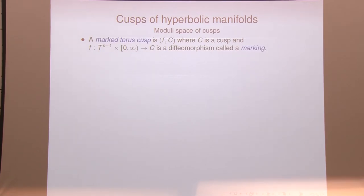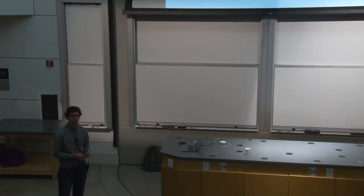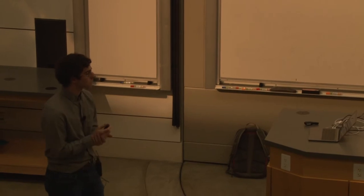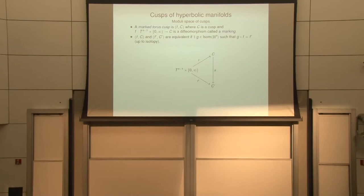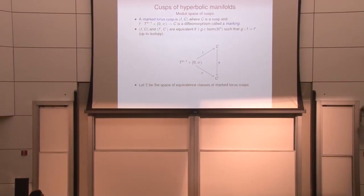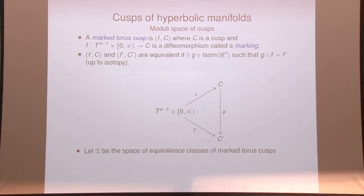The next thing I want to talk about is the moduli space of cusps. In the right setting it's pretty easy to parameterize these things. I'll be dealing with marked structures: a marked torus cusp is a cusp along with an identification of it with a torus cross interval. This is similar to what one does in Teichmüller theory. You want to consider two marked cusps equivalent if their markings differ up to isotopy by an isometry. We call this space T — the space of equivalence classes of marked structures on cusps.